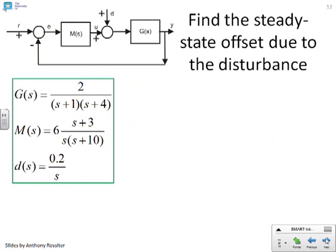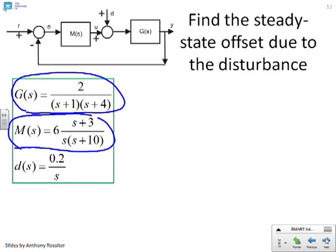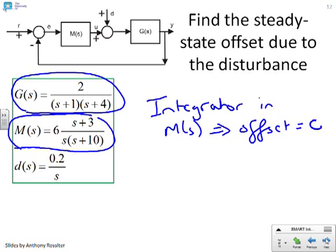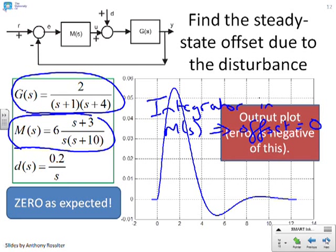So a final example here. There's the standard loop. And you'll see it's the same example as before, except I've moved the integrator to the compensator instead of being in G. But otherwise, the numbers are the same. And all I need to do here is say integrator in M of S implies offset equals 0. And there's the plot. So you can see it. And indeed, you'll notice that the plot tends to 0 as expected.